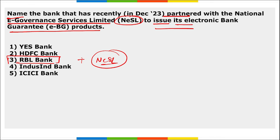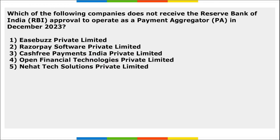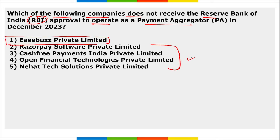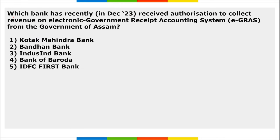Next: which of the following companies does not have RBI approval to operate as a payment aggregator? It is Easebuzz Private Limited — all other organizations received RBI approval to operate as payment aggregators.